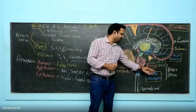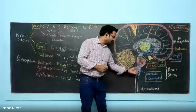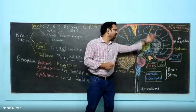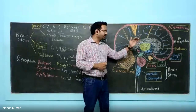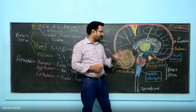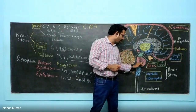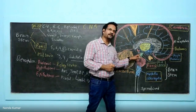Brain stem is called as brain stem because it is like a stem-like structure on which the entire brain rests. Brain stem has got three parts: medulla oblongata, pons, and then the midbrain.